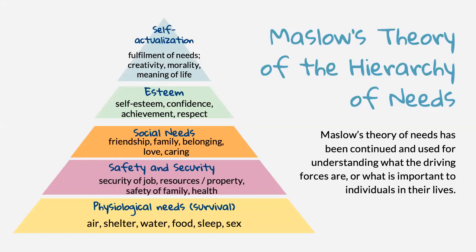Human beings then strive toward the tip of the hierarchy of needs, which is to reach the state of self-actualization — the state of fulfillment where they are able to strive for more creativity in their life, morality, happiness, and fulfillment, and can find meaning in life. These are the levels of the hierarchy of needs required by humans, and this theory has been accepted and widely used to explain human needs.